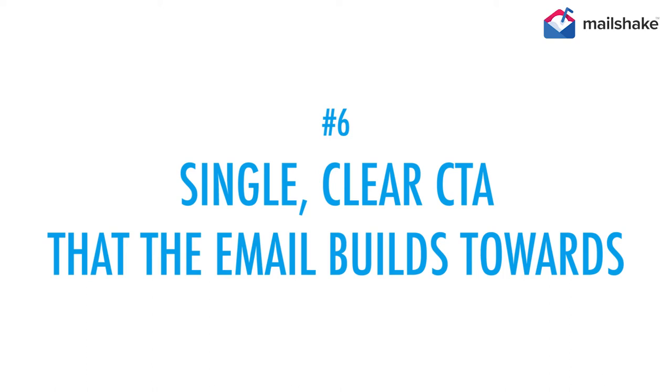Number six: have a single, clear call to action. One CTA — make it very clear, and build the whole email toward it. The first part introduces yourself, the second covers the meat of what you're trying to accomplish, and the third part is the call to action. It could be clicking a link, responding to your email, or scheduling a meeting. The less friction and the lower the ask, the easier it is for someone to say yes or no — and even a 'no' means you've started a conversation.